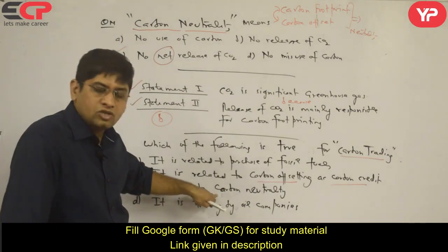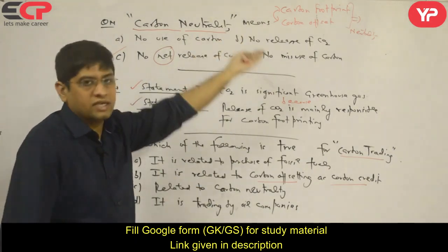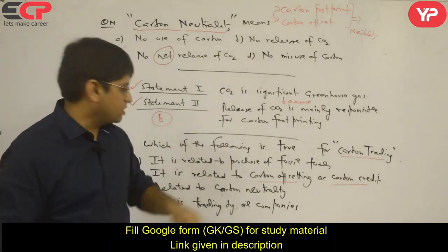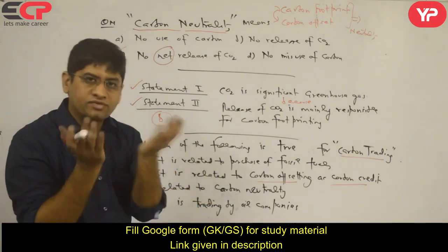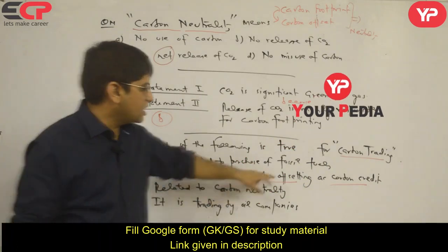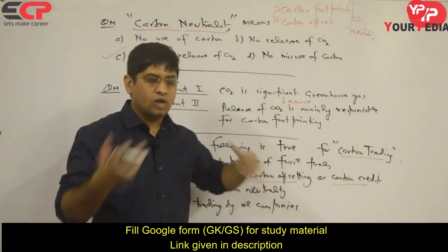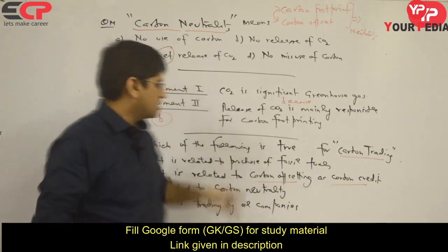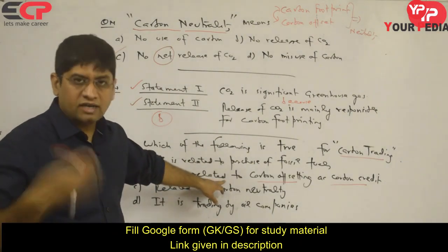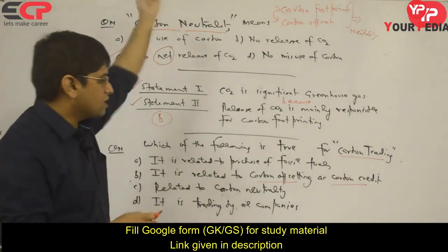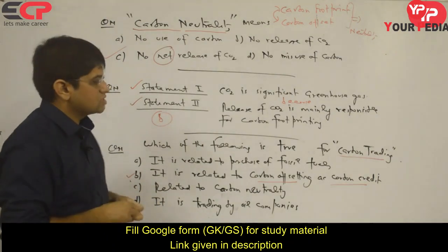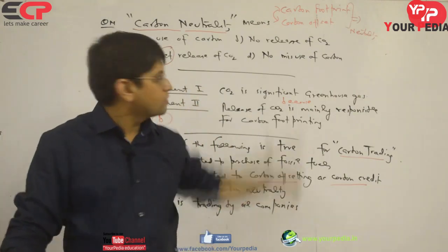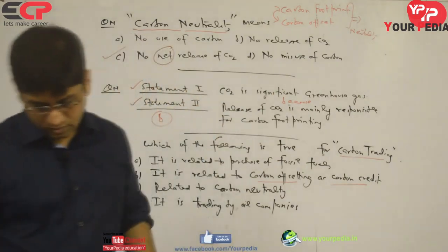Carbon neutrality is rejected as the answer because neutrality only involves footprinting and offsetting — no financial credit or trade involved. Offsetting may lead to neutrality, but there is no trading in that. Carbon trading means: I made a device, your carbon dioxide emission reduced, and I get a carbon credit — a deal — which I can trade. So carbon trading is related to carbon credit. Trading and credit are related terms.